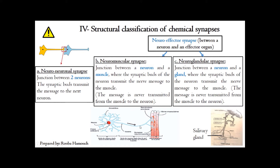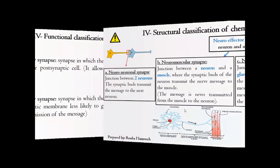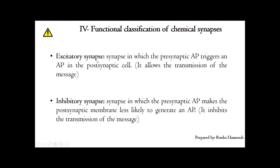The message is never transmitted from the muscle to the neuron — the message is always unidirectional. Concerning the neuro-glandular synapse, it is the junction between a neuron and a glandular cell; here the salivary gland is represented, and the message is never transmitted from the gland to the neuron. The neuromuscular synapse and the neuro-glandular synapse are called neuro-effector synapses because they are synapses between a neuron and an effector organ.